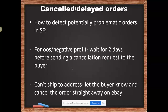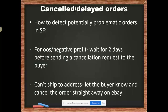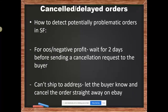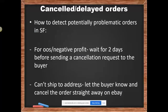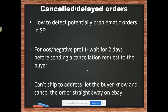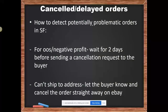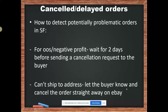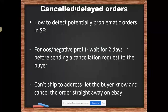The three main reasons orders fail in Purchase Issues are: out of stock, negative profit, and can't ship to address. If the reason is 'can't ship to address,' there's no point waiting — Amazon just won't ship the item to that address. So I let the buyer know right away using a different template and cancel the order immediately.